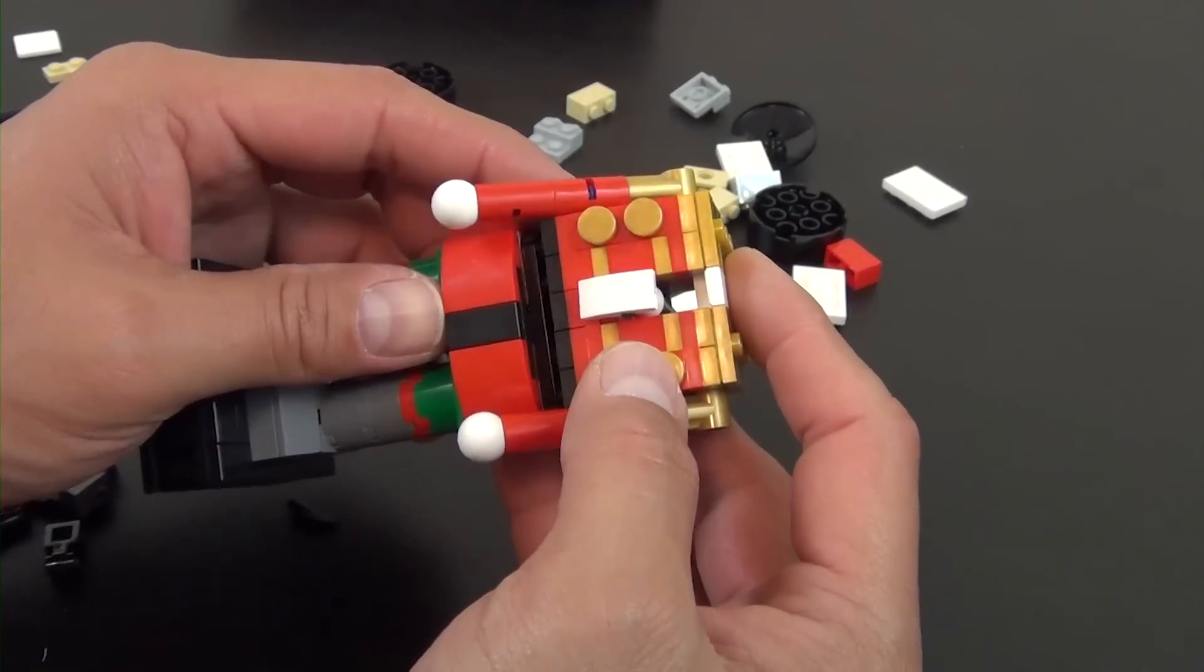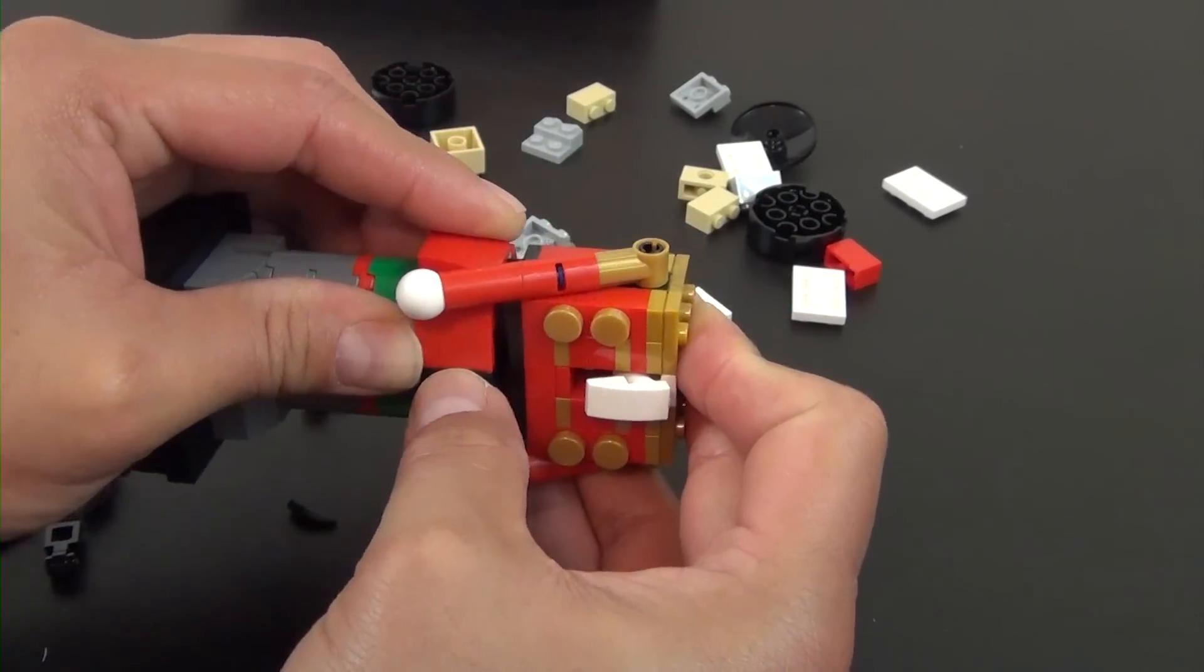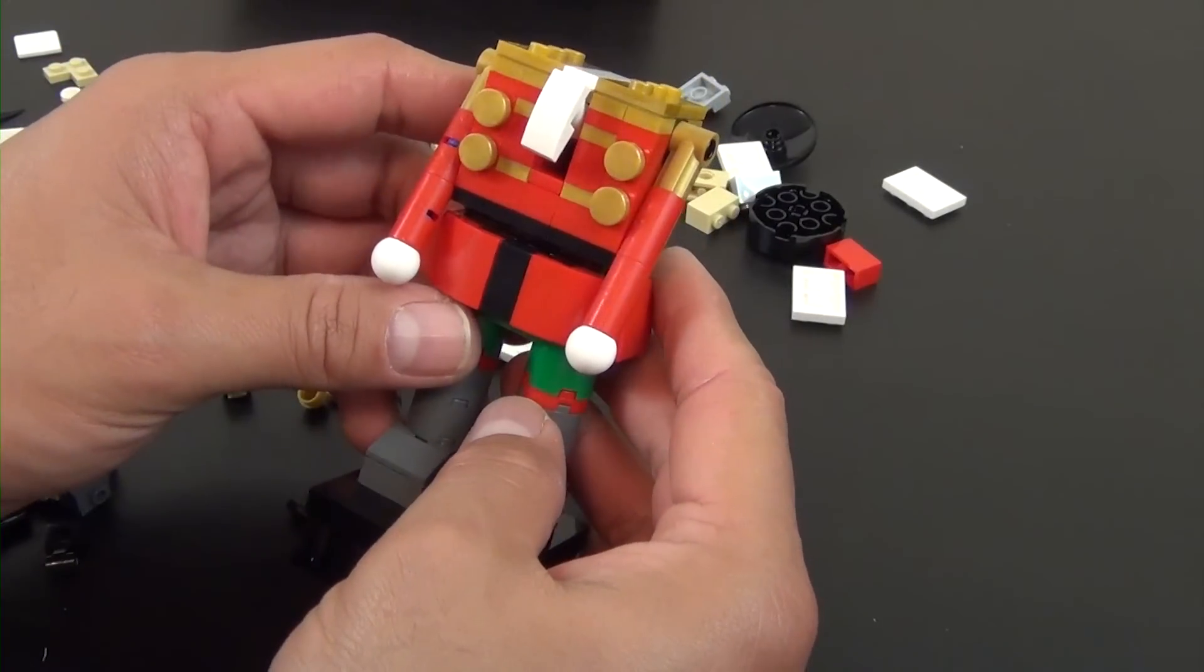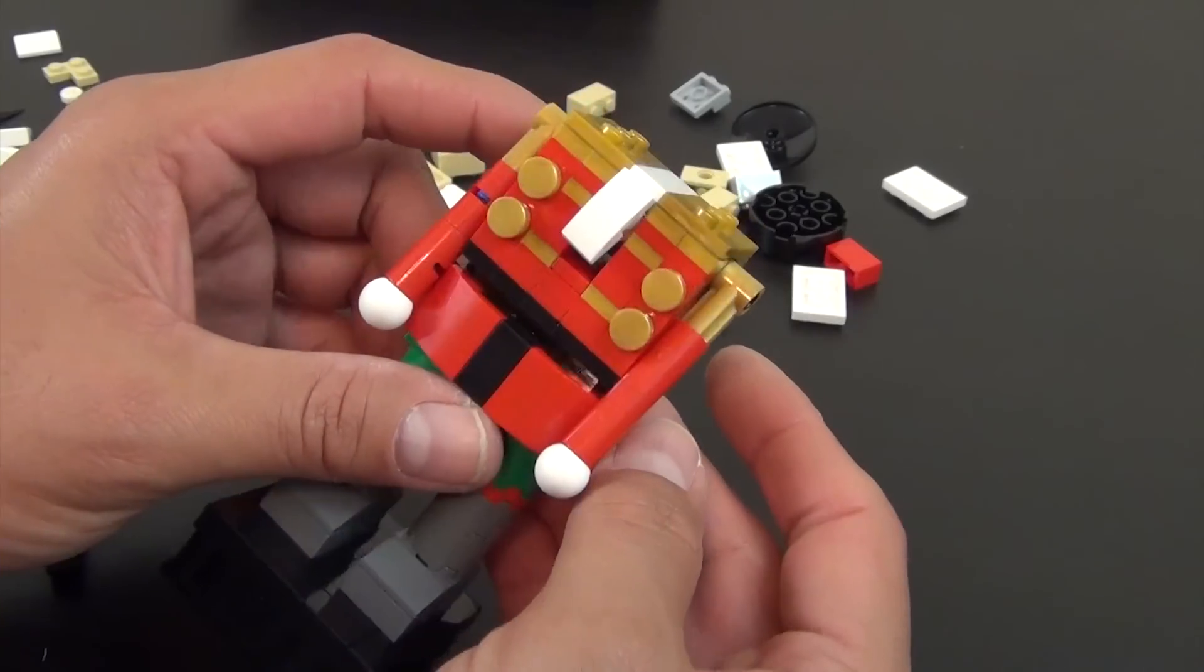We have the upper portion built. Pop that right on the waist area, just like that. There's a little cracker, pretty cool. So let's build the head, the head portion.